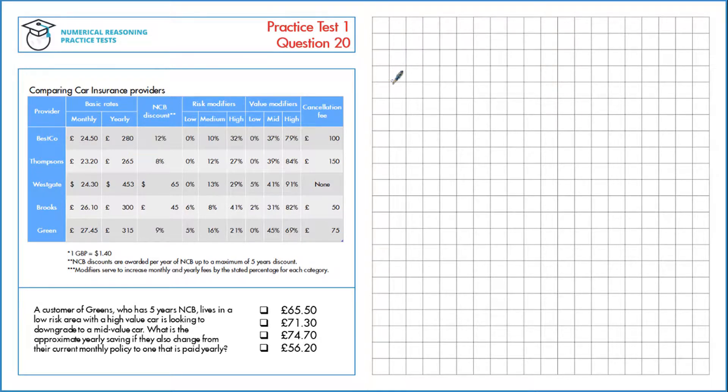A customer of Green's who has 5 years no claims bonus lives in a low risk area with a high value car and is looking to downgrade to a mid value car. What is the approximate yearly saving if they also change from their current monthly policy to one that is paid yearly?